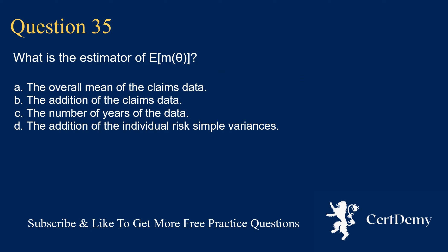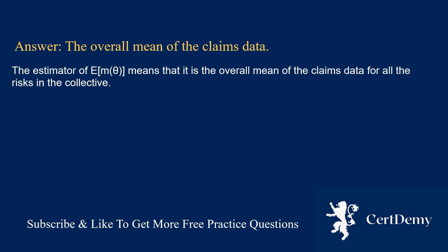Question 35. What is the estimator of E(M(Theta))? Options: the overall mean of the claims data; the addition of the claims data; the number of years of data; the addition of individual risk sample variances. The answer is: the overall mean of the claims data. The estimator of E(M(Theta)) is the overall mean of the claims data for all the risks in the collective.